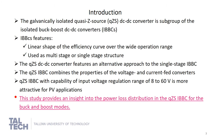In this paper we focus on the galvanically isolated quasi-Z-source DC-DC converter as a subgroup of isolated buck-boost DC-DC converters. This converter features a flat efficiency curve over a wide operation range and is used as a multi-stage or single-stage structure. It is more attractive for PVI applications because of its wide input voltage regulation range, between 8 to 60 volts.